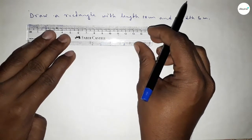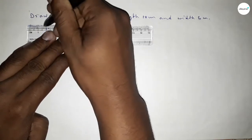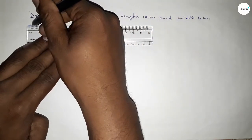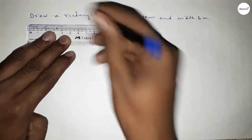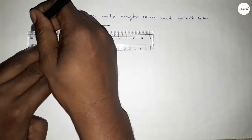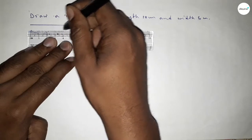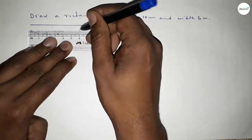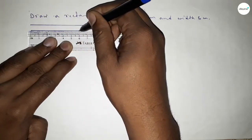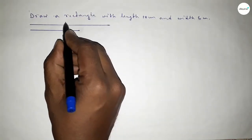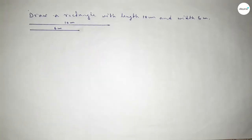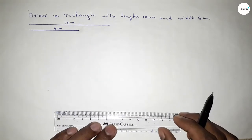First of all, we draw a line of length 10 centimeter — this is 10 centimeter. Then drawing another line of 6 centimeter — this is 6 centimeter. So this side is 10 centimeter and this side is 6 centimeter.